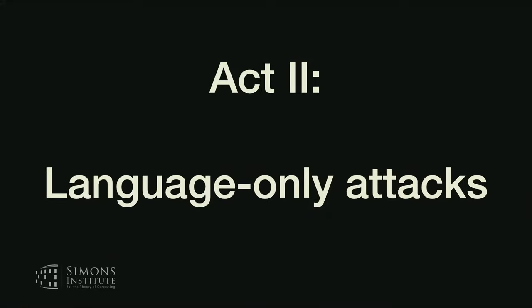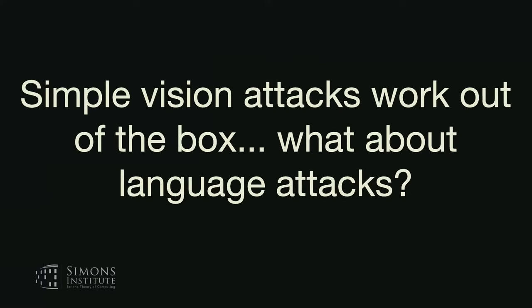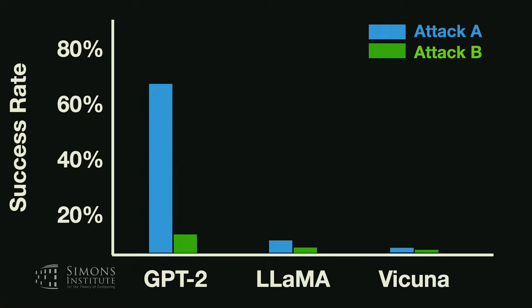Now I'll move away from multimodal image attacks into text-only attacks. First: to get the multimodal attacks to work on images, I didn't need any new attacks — I just took existing attacks from the literature and ran them out of the box and everything worked. For text-only attacks, we tried running existing attacks to make models say harmful things. One attack could half the time make GPT-2 say a particular harmful thing, but everything else failed. And GPT-2 was never designed to not say harmful things. The existing attacks are not sufficient, and it gets worse as models get better.